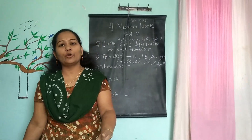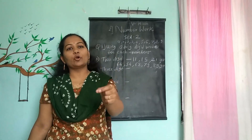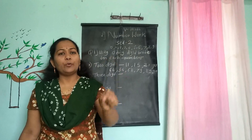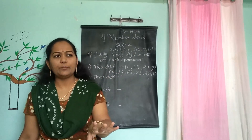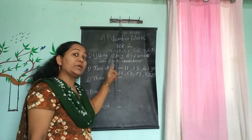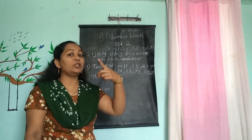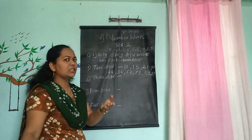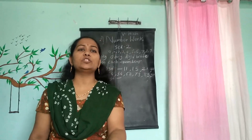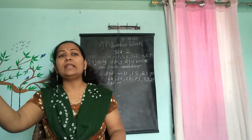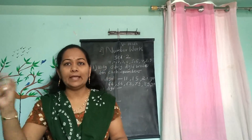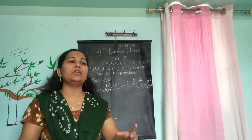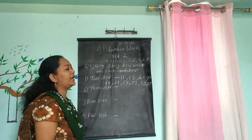I wish to see your notebook for checking. If you write the answer in your own way, that is more important. What matters is to understand the concept — it is not important that the numbers should be exactly these. I repeat: you can write your own numbers. For 3-digit numbers, same way — you can use from 100 to 999. Any 3-digit number you can write. Out of those, write any 10 numbers.